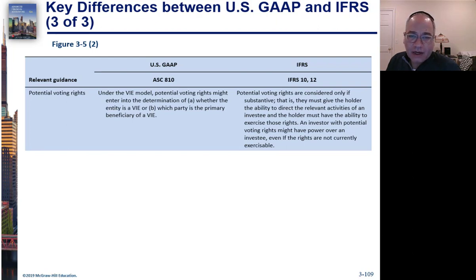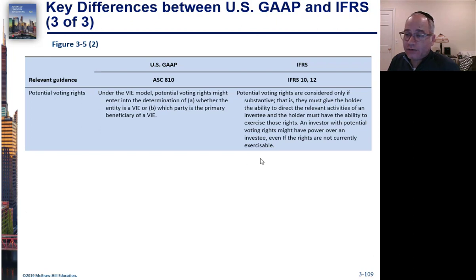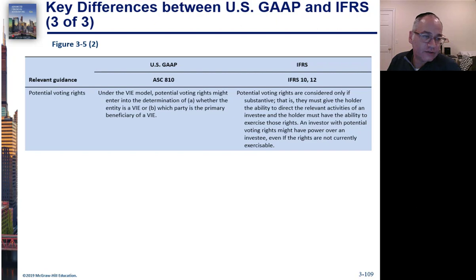Under US GAAP, under the VIE model, potential voting rights may enter into the determination of whether an entity is a VIE and which party is the primary beneficiary — specifically where voting rights are out of proportion with the shares. IFRS says potential voting rights are considered only if substantive and they give the holder the ability to direct relevant activities. An investor with potential voting rights might have power over an investee even if the rights are not currently exercisable.